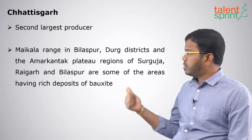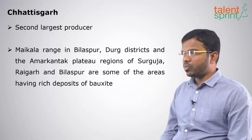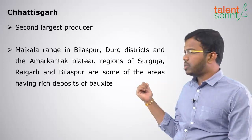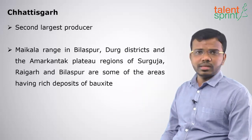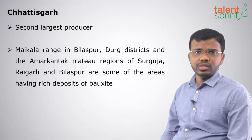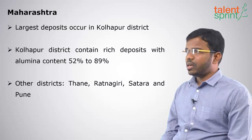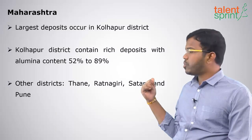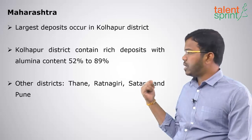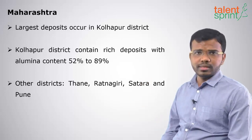Kalahandi and Koraput districts in Odisha are very famous for Bauxite extraction. Moving on to Chhattisgarh, the second largest producer, Bauxite is found in the Maikala range of Bilaspur and Durg districts, and in the Amarkantak plateau regions of Surguja and Rajgarh. In Maharashtra, larger deposits occur in Kolhapur district as well as Thane, Ratnagiri, Satara and Pune districts.